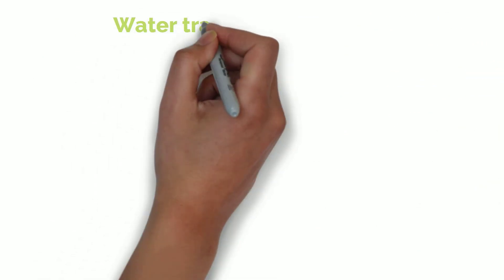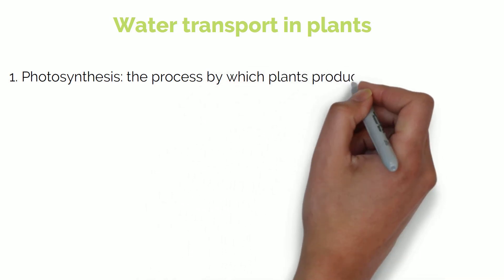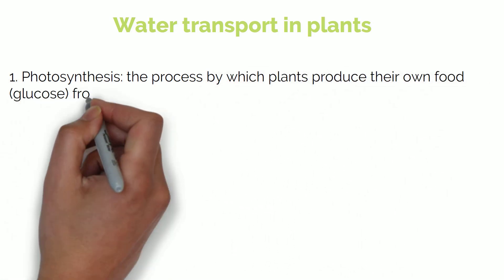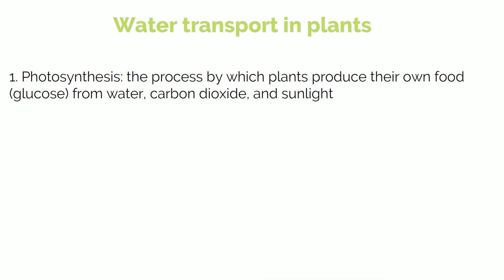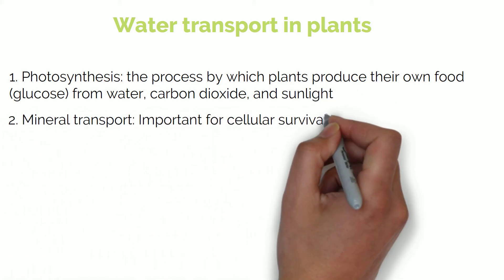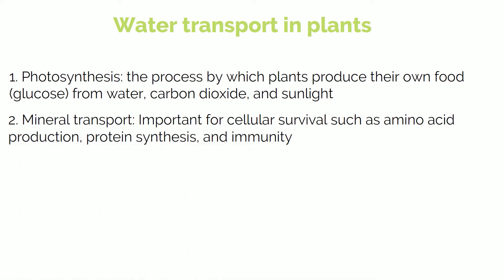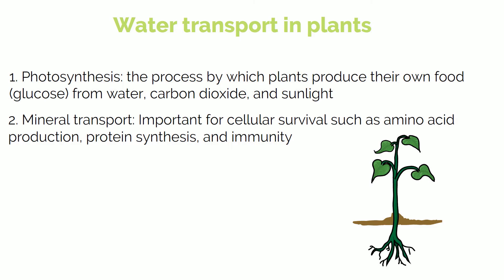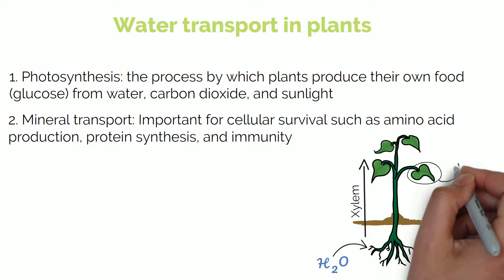Now onto water transport in plants. Plants require water for two major reasons. Number one, photosynthesis — the process by which plants produce their own food or glucose from water, carbon dioxide and sunlight. Number two, mineral transport, which is important for cellular survival such as amino acid production, protein synthesis and immunity. Water enters the plant through the roots and is transported through the xylem vessels to the leaves, where it is used for photosynthesis and transpires into the air.